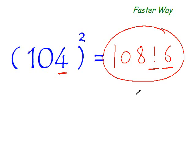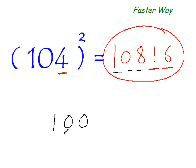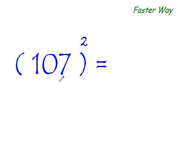10,816 — isn't that simple and fast? Let me explain it a little more. I have taken the base as 100. Now 104 is 4 more than the base, so immediately add that 4 to this entire number: 4 plus 104 is 108, giving you the first three digits. Since base 100 has two zeros, two more digits to go. Square that distance: 4 squared is 16. So the answer is 10,816.